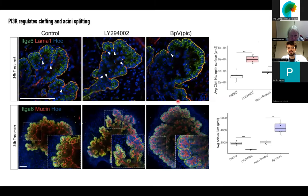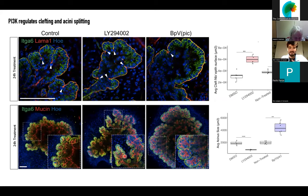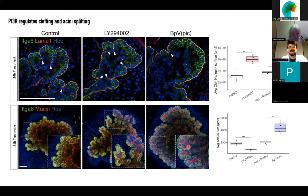We then wanted to know what developmental signals might be regulating this process and the ability of ductile cells to regulate branching morphogenesis. We focused on the PI3-kinase pathway, as it was described in other organs to regulate cell rearrangements. By inhibiting the PI3-kinase pathway with a drug called LY, we observed a significant increase in the number of clefts, which coincides with an increase in the number of acini and a decrease in their size, meaning more clefts leads to over-fragmentation of the acini. Conversely, over-activating the pathway with BPV produced fewer clefts and enlarged acini.